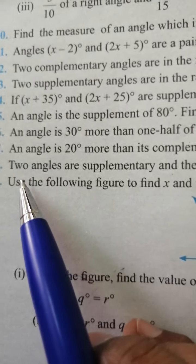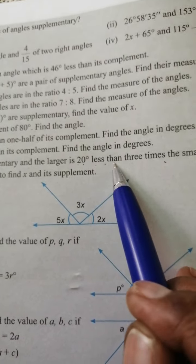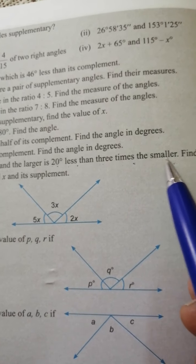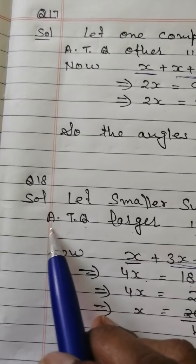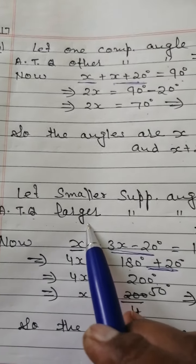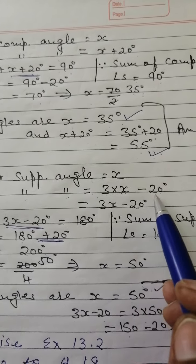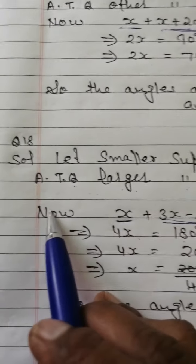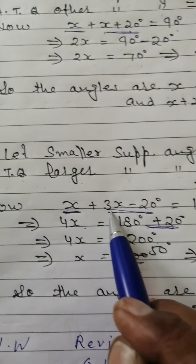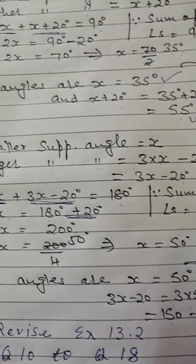Question number 18: Two angles are supplementary and the larger is 20 degrees less than 3 times the smaller. Find the angles. Solution: Let the smaller supplementary angle equal x. According to the question, the larger supplementary angle equals 3 times x minus 20, that is 3x minus 20. Now add these two angles equal to 180 degrees, because the sum of supplementary angles is equal to 180 degrees.